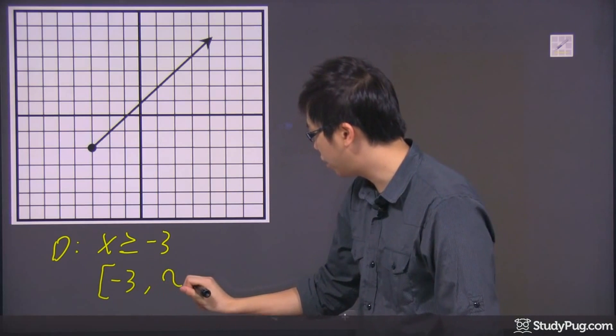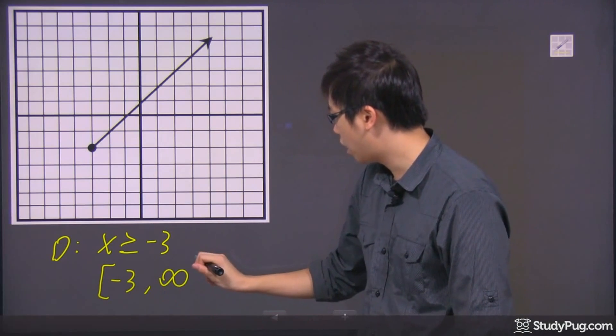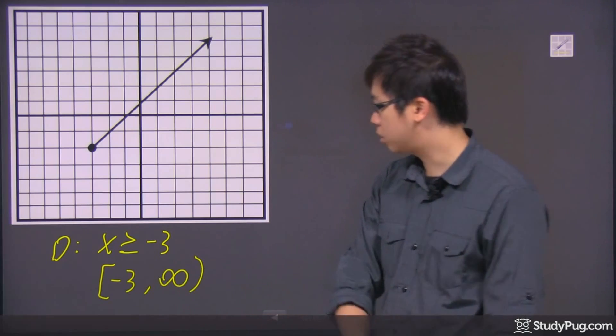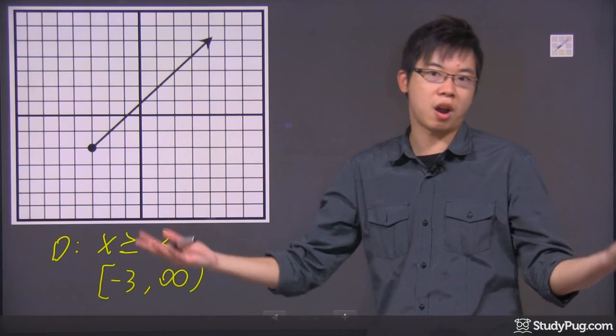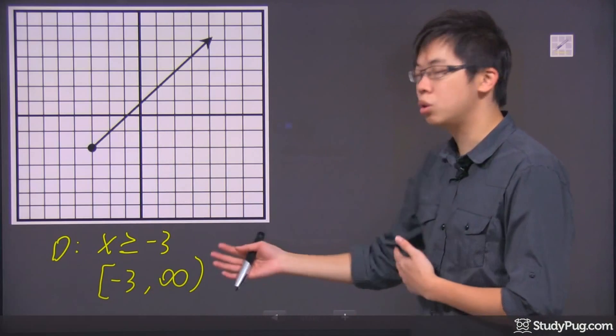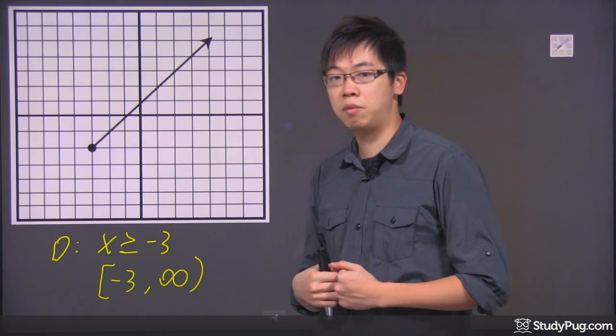So you just have to do that little infinity sign. And you do an open bracket, a curved bracket, sorry. So it just kind of means that it goes on and on forever. It doesn't stop. So there's two ways to write your domain in this case.